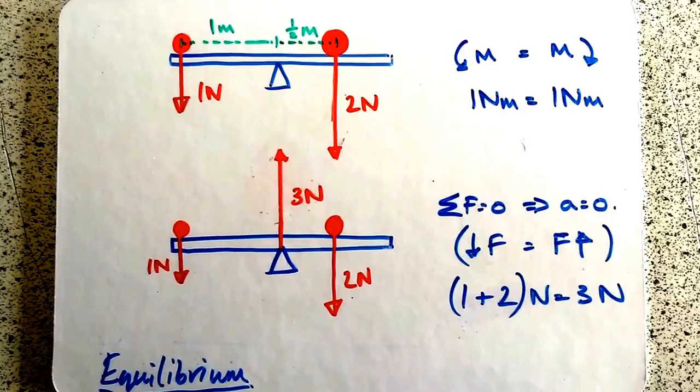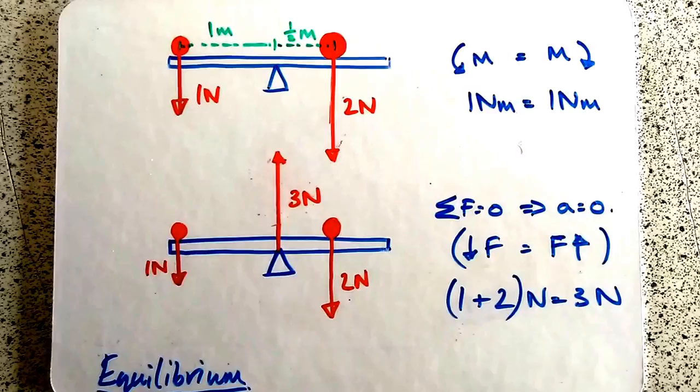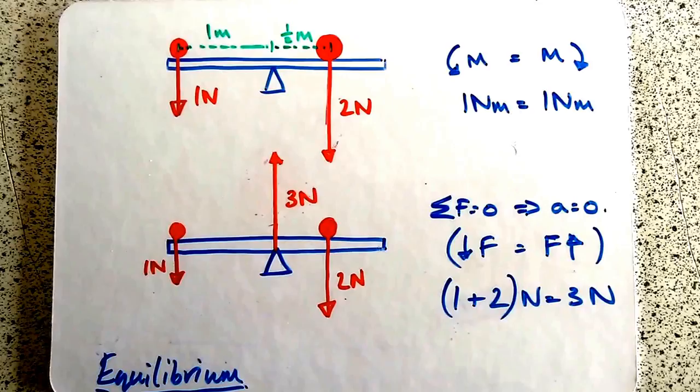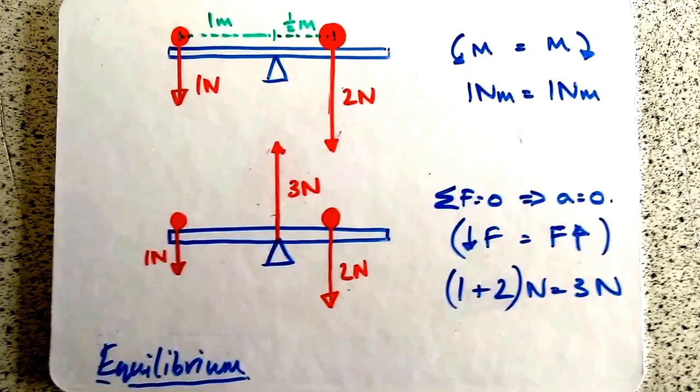We've got one newton force on the left, one metre away. And a two-newton force, half a metre away. So force times distance means one newton metre on each side. Therefore, we have the equilibrium condition of equal moments satisfied.